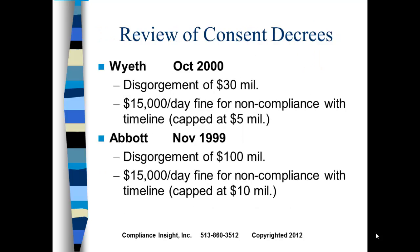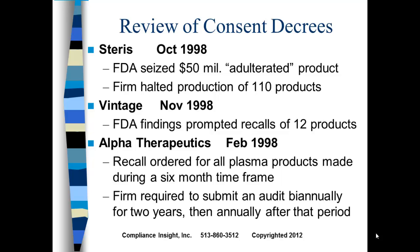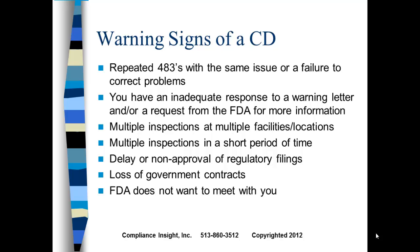Wyeth again: disgorgement of $30 million, $15,000 a day for non-compliance capped at $5 million. Abbott: disgorgement of $100 million, $15,000 a day capped at $10 million — a lot of money going to the treasury. Steris: FDA seized $50 million of deemed adulterated product and the firm halted production of 110 products. Vintage Pharmaceuticals: FDA findings prompted recalls of 12 products. Alpha Therapeutics: a recall was ordered for plasma, and the firm was required to submit an audit biannually for two years, then annually thereafter — a lot of work and a lot of money.